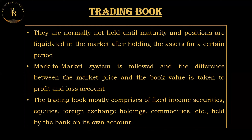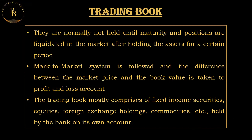Commodities held by the bank on its own account are also part of the trading book. The difference between the market price realized and the book value is accounted for as a profit or loss. The trading book is mainly exposed to market risk, market liquidity risk, credit risk, and operational risk. Credit risk and operational risk are common to both the banking book and the trading book.